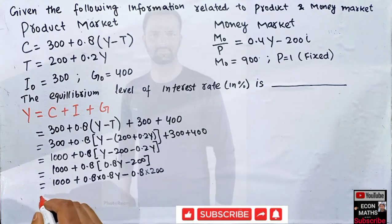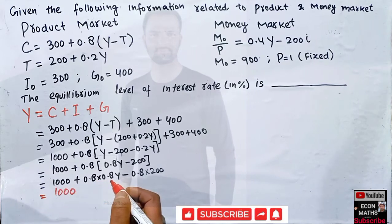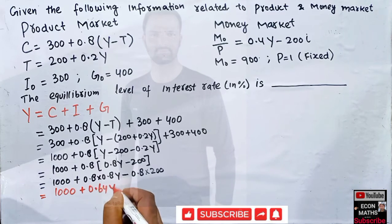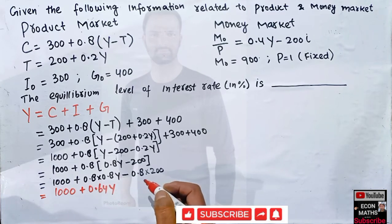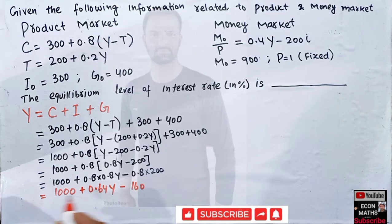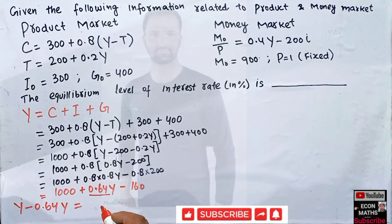So we have Y = 1000 + 0.64Y - 160. Transposing 0.64Y to the left-hand side: Y - 0.64Y = 1000 - 160, which gives 0.36Y = 840.